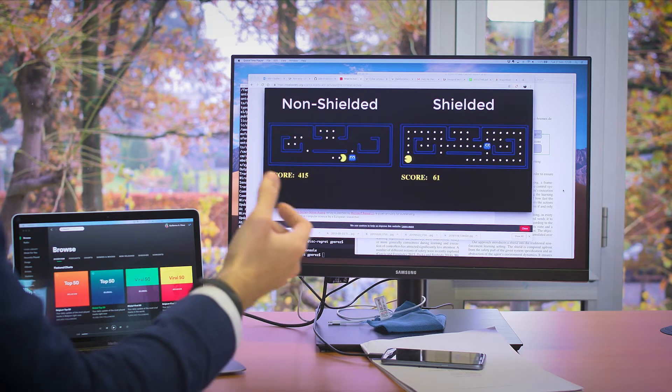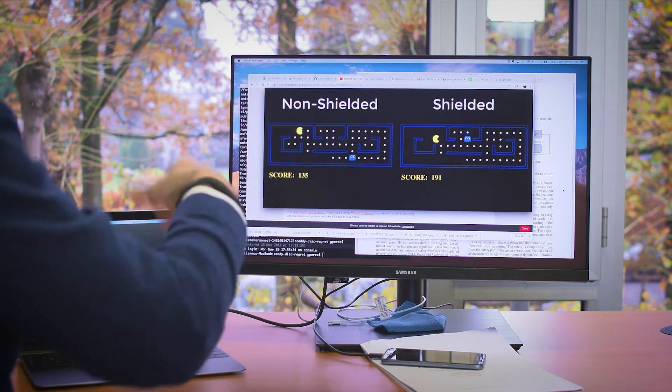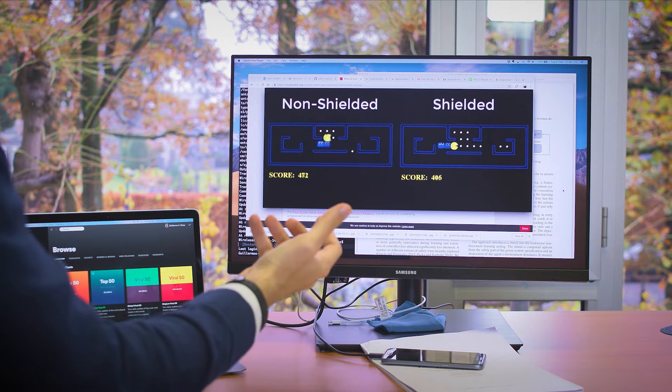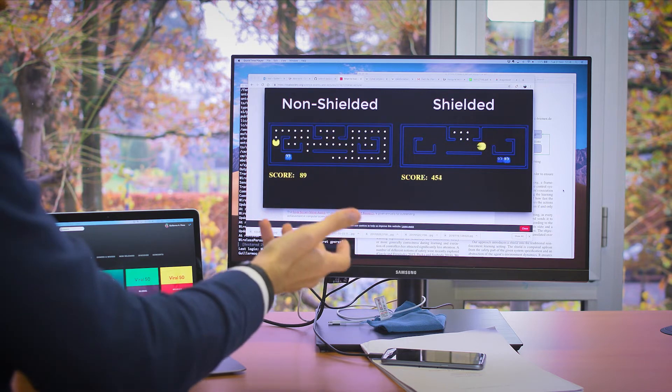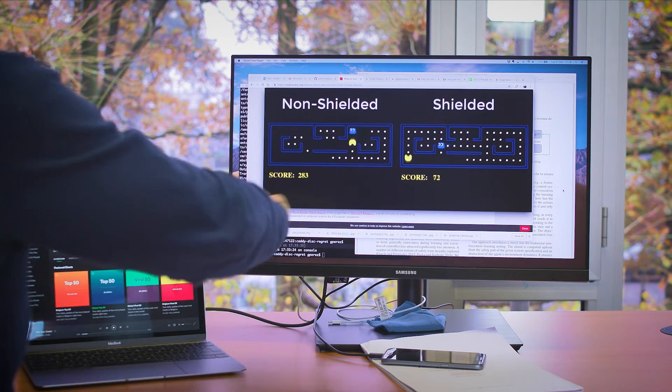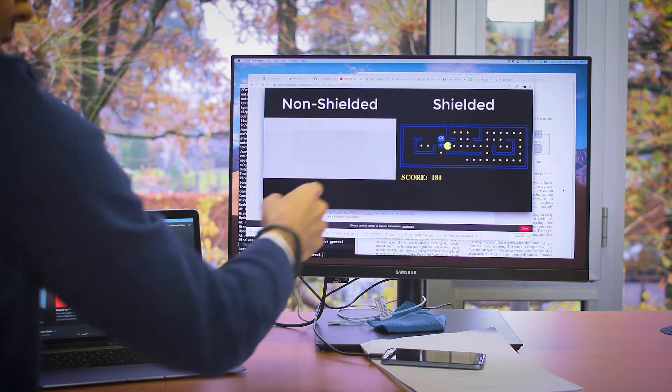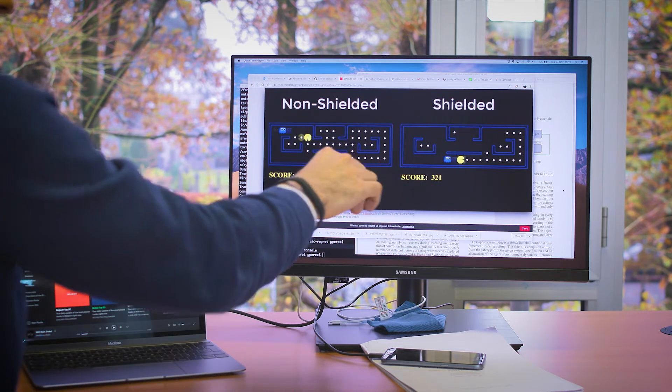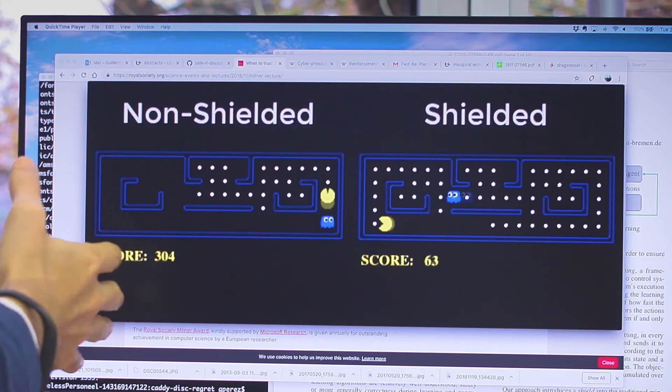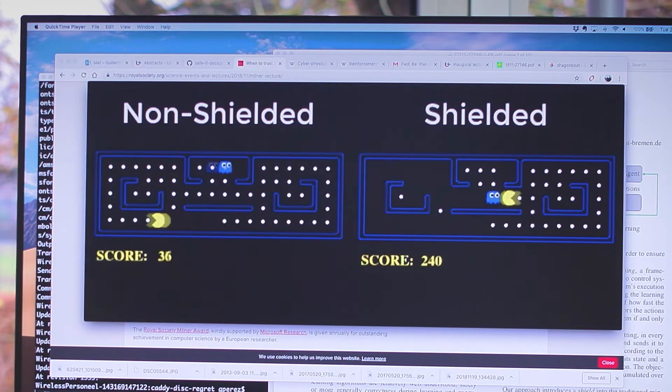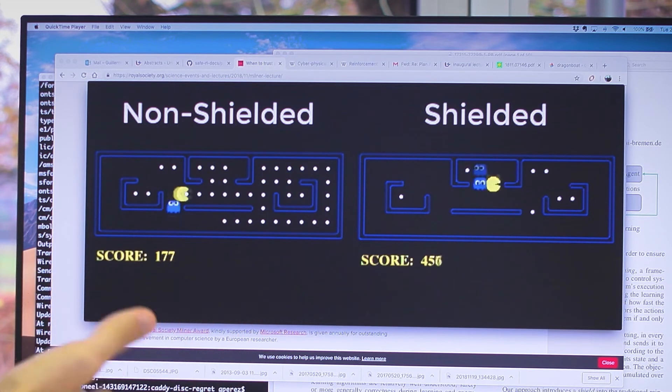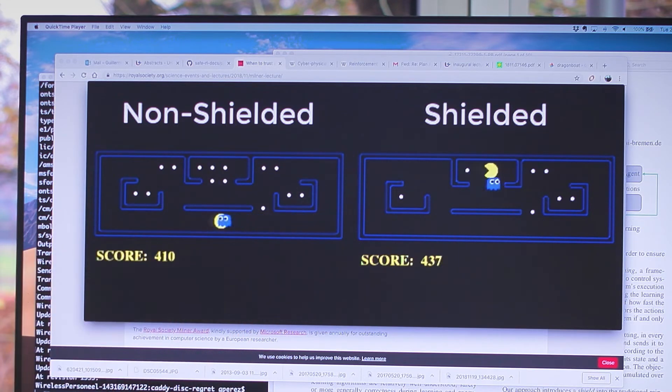One of the things we've developed in verification is that if you want a model to do something, you can actually synthesize a way for the system to do it. What we've done here on the right side is asked Pac-Man to never get eaten by this single ghost from the beginning. On the left side, you're applying some off-the-shelf learning tool which learns through the score whether it's good or bad to get eaten and how to collect the pearls.